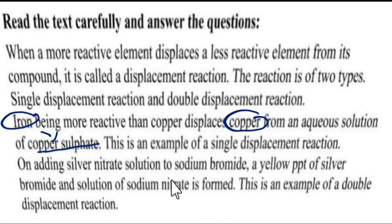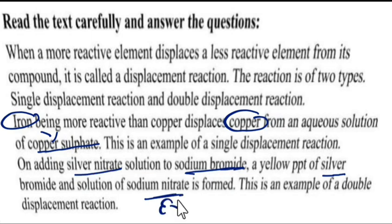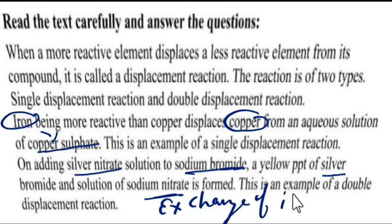In the second reaction, silver nitrate reacted with sodium bromide, giving a yellow precipitate of silver bromide and forming sodium nitrate. Basically, an exchange of ions occurred. This type of reaction is called a double displacement reaction.